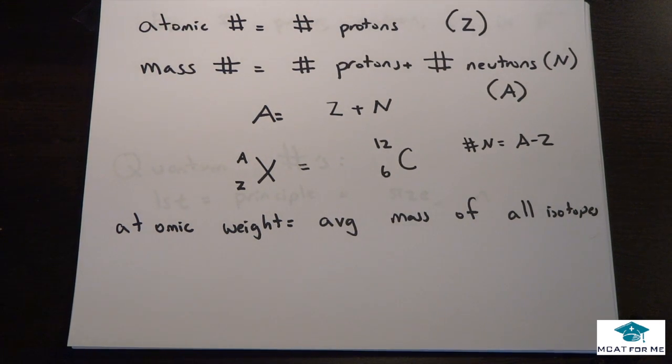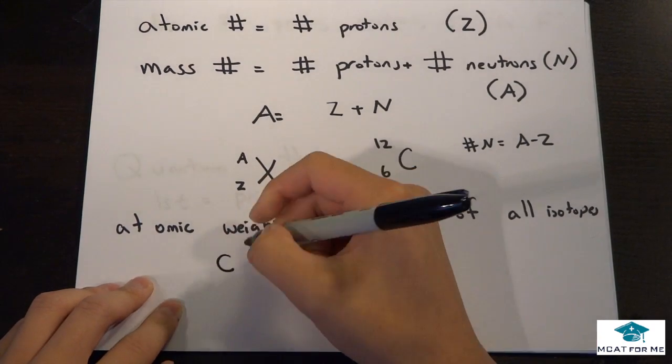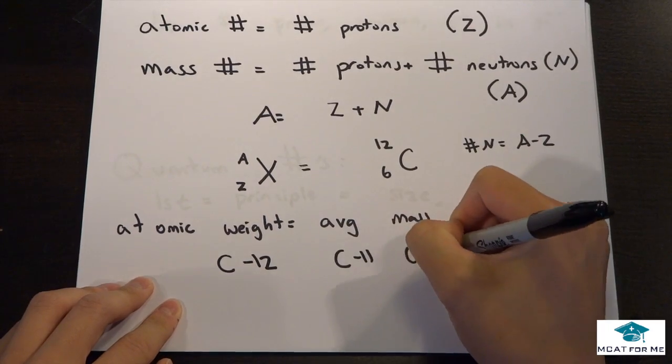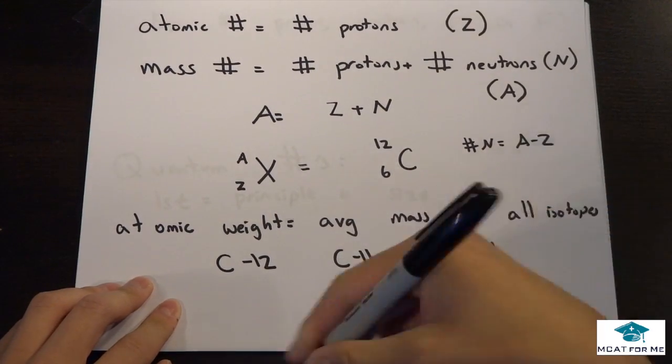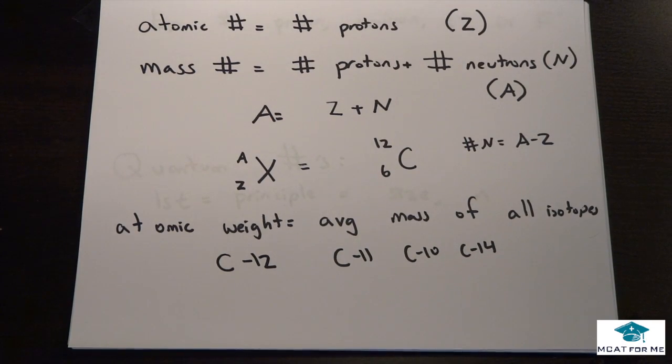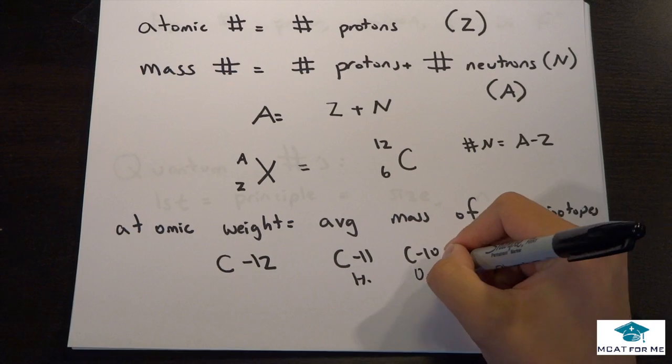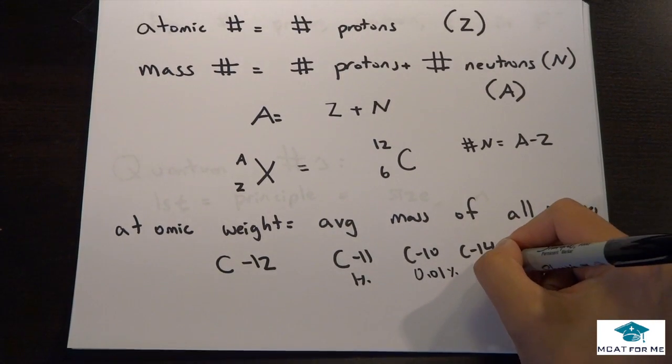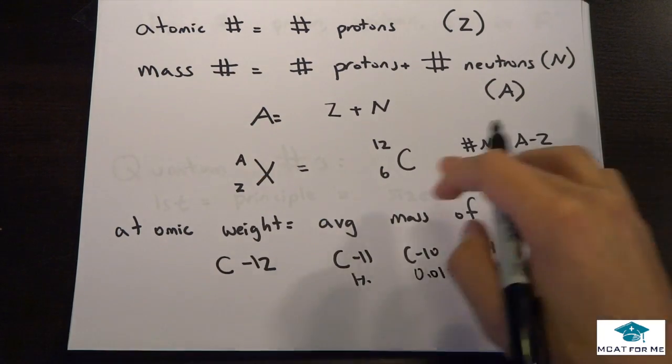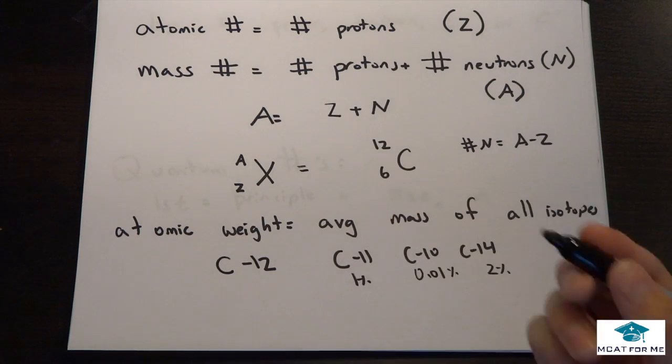Atomic weight is the average mass of all isotopes. For example, you don't just have carbon-12. You have carbon-11, carbon-10, carbon-14. You have a lot of these, but only certain ones in excess or greater proportion. We average all these up and find the atomic weight based on the percentages and the actual weight itself.